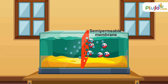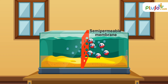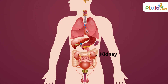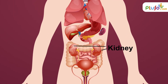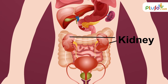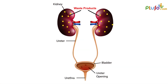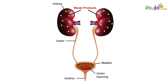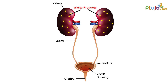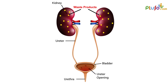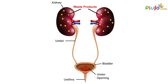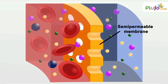Now that we know what osmosis is, let's try to find examples of it in our daily life. In the human body, kidneys filter waste products from our blood through osmosis and throw them out of our body as urine. The kidney has to find a way to take out waste products from the blood while making sure the blood stays inside the body. So it takes help of osmosis. The semi-permeable membrane in the kidney lets water and smaller waste molecules move inside it, while the larger blood molecules stay outside in their respective blood vessels.